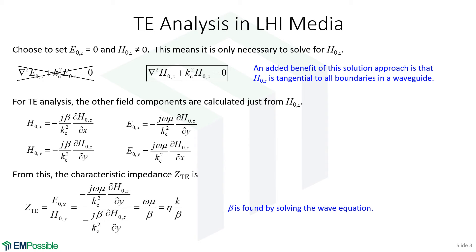We may be interested in the characteristic impedance for TE modes, and that is defined as the amplitude of the electric field divided by the amplitude of the magnetic field. We can substitute in the expressions we have above and simplify, and we end up with an expression for it. Later on, when we actually solve this differential equation and calculate the phase constant, we will come back to this expression and calculate the characteristic impedance of the modes more precisely. This phase constant needs to be found by solving our governing equation for the z component of H.